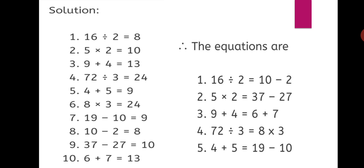Fourth one: 72 divided by 3 equals 24. Another operation that gives 24 as the answer is 8 into 3. So your fourth equation will be 72 ÷ 3 = 8 × 3.